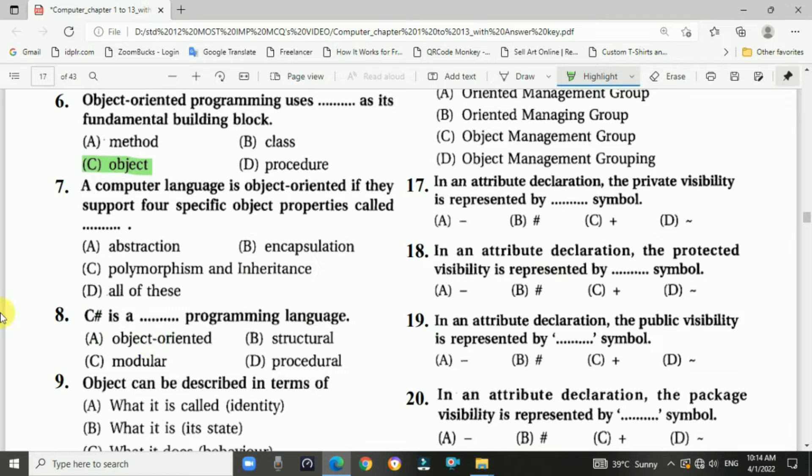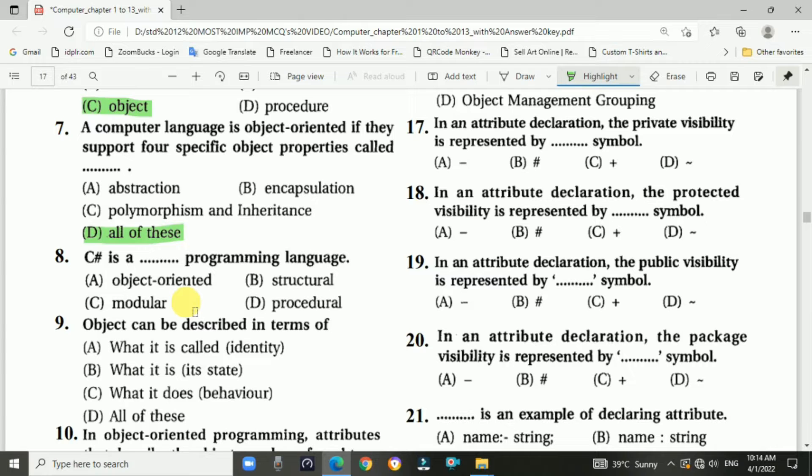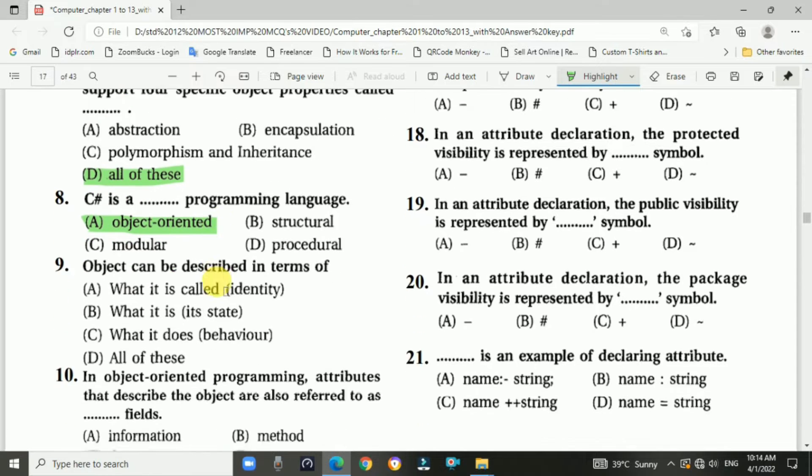Question number seven: A computer language is object-oriented if they support for specific object properties called blank. Answer is the right, abstractions and modality, abstractions and encapsulation, polymorphism and inheritance. Question number eight: C# is a blank programming language. It is an object-oriented programming language.